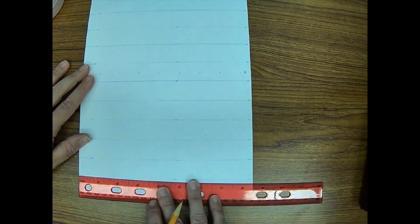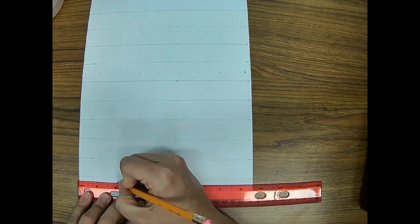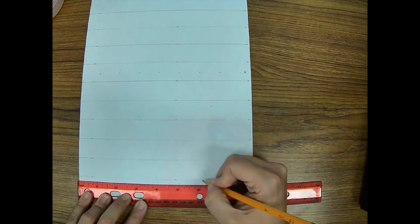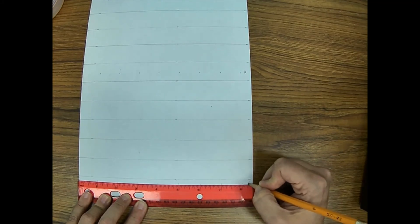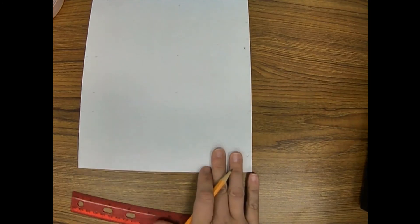And bringing our ruler down, sliding it down. Go ahead and make little dots there. This is actually a really simple process that gives us a really good outcome on our grid.